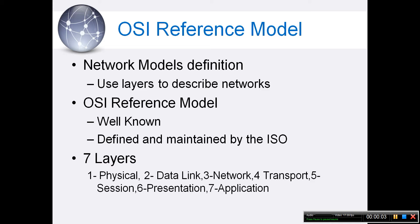OSI Reference Model. Let's define network models first. Network models use layers to describe networks. Each layer describes the services provided to the layer above it and those required from the layer below it. The OSI reference model, or Open System Interconnection model, is the most well-known model, maintained and defined by the International Standard Organization. It defines a networking framework to implement protocols in seven layers, numbered from the bottom — closest to the network — to the top, closest to the user.